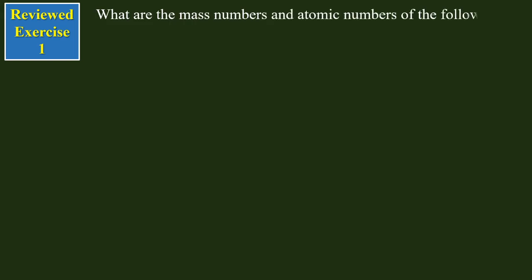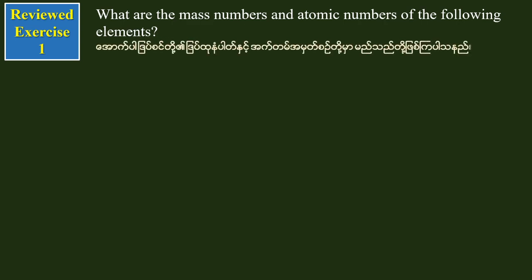What are the mass numbers of the following elements? There is element K, 92-Pb-206, uranium, 92-U-235, and 82-Pb-206. The mass numbers are 206, 235, and 238.